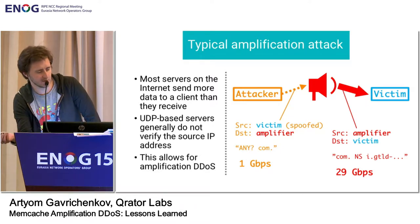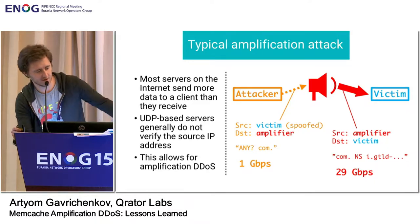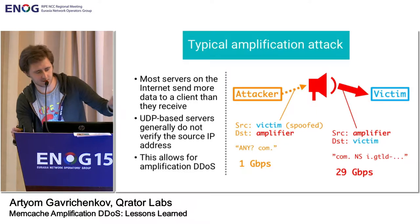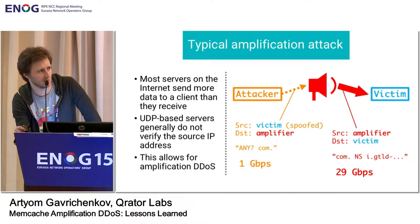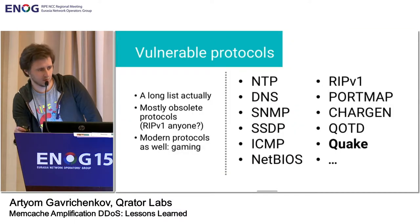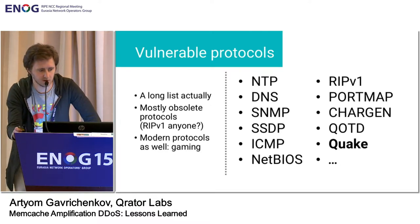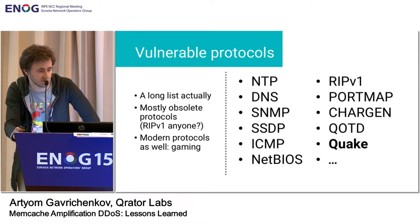The attacker generates one gigabyte and the victim gets 30 gigabytes. This certainly generates problems with the link and with throughput. There is a long list of protocols vulnerable to amplification.